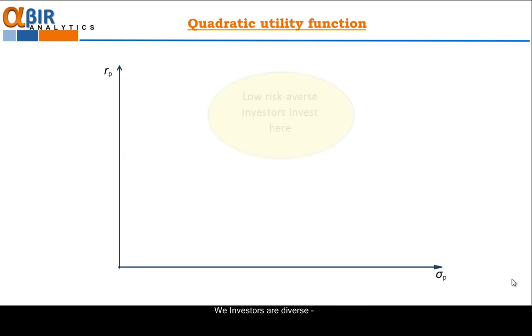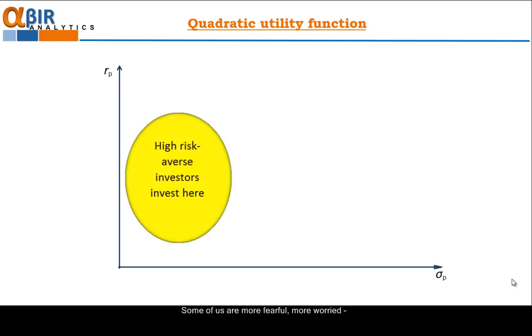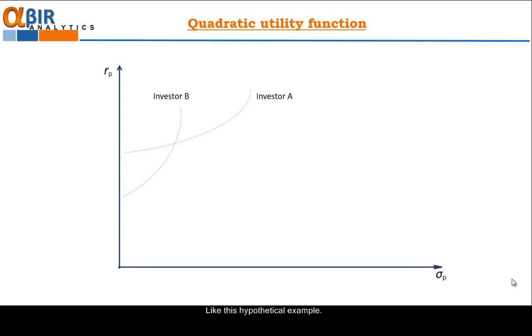We investors are diverse. Some of us are more adventurous, more courageous. They can take high level of risk and they have low risk aversion. Some of us are more fearful, more worried. These people cannot afford to invest in high level of risk. They are high risk aversion investors. That means that we have different utility iso-quants. Like this hypothetical example, investor B is more risk averse than A. She requires much higher remuneration for unit risk taken than investor A. That is why her iso-quant is so steep.